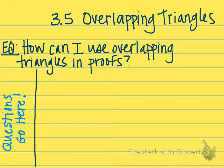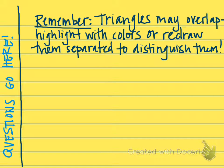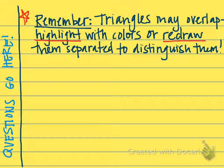Your central question for 3-5 is: how can I use overlapping triangles in proofs? Something you always need to remember when you see the pictures for these proofs is that sometimes the triangles might overlap and they can kind of be hidden in the picture. A couple things you can do: you can either highlight the triangles with different colors, or you can redraw them separated to distinguish them.